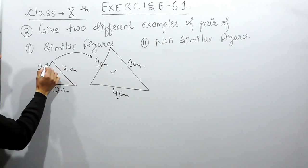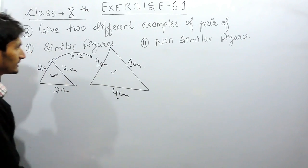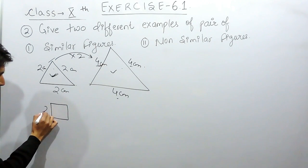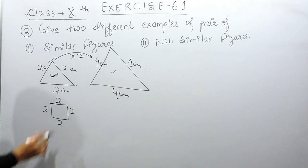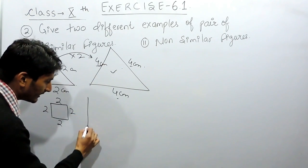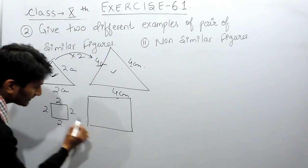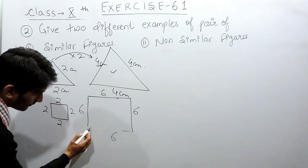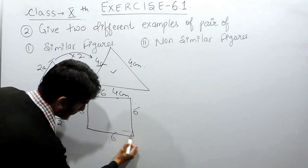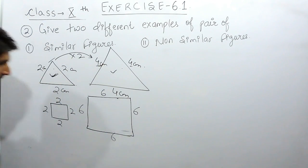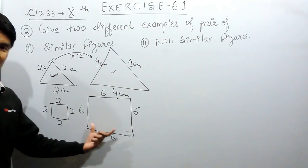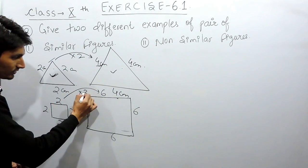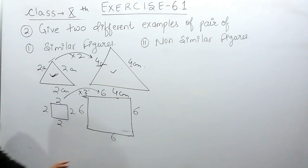Similarly, if I consider another example of a square with sides 2 cm each, and again if I see this figure in a magnifying glass and increase the side to 6 cm on each side, I will say that these two squares are similar figures. The shape of these two is the same but the size is different, and the size has been increased three times.